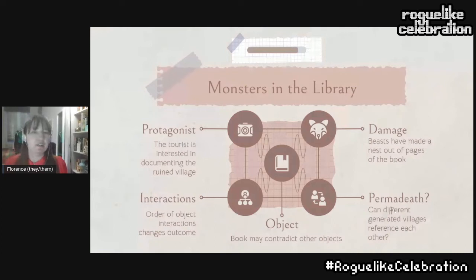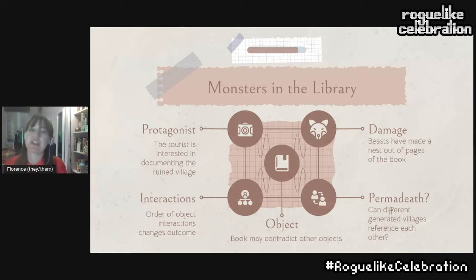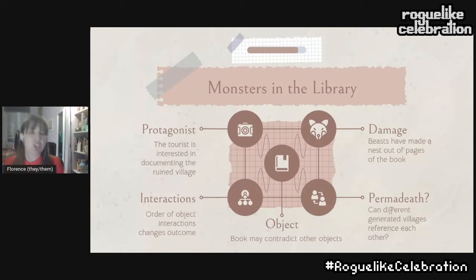Let me give a more in-depth example of how this might actually work in practice. Say the protagonist is a tourist interested in the disaster tourism of this ruined village, and you come across a book — an object which, like all objects in this game, is very subjective and has its own point of view. Because this particular village was destroyed by wild animals, the book will have had pages ripped out for the animals to make a nest. The order in which you interact with the book pages and the book itself — because it's a fragmented object — will change the object biography that you construct and the text that's generated.